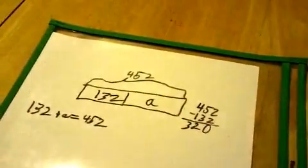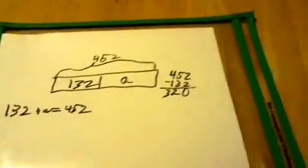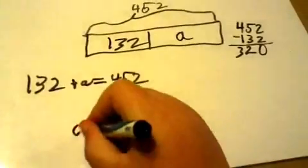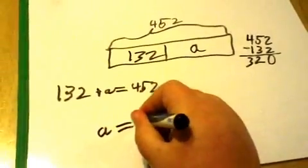Now, we know that A is 320. So, right here, we can put A equals 320. And that is a tape diagram.